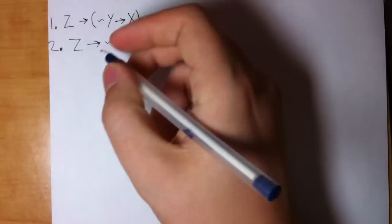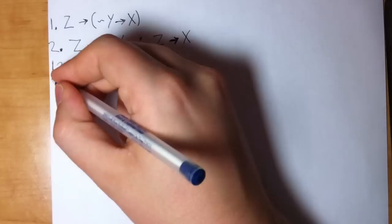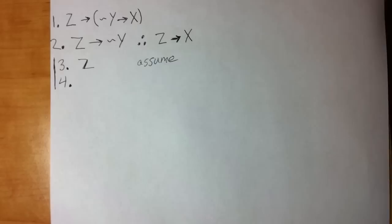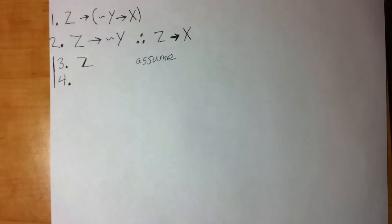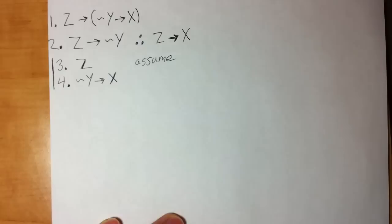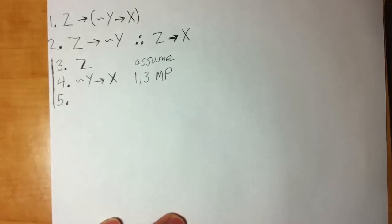That means I start with step one: assume the left side. Every time we make an assumption, we draw that line out to the left. I assume the left side, which means assume Z. This line out to the left means I've made up Z and I have to operate with that assumption until I finish step two. Now that I've got Z, I can look at line one and do modus ponens.